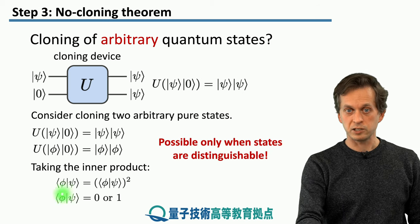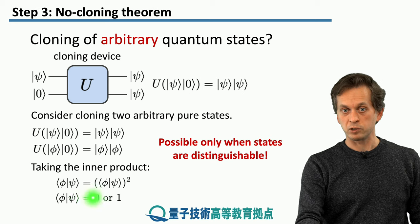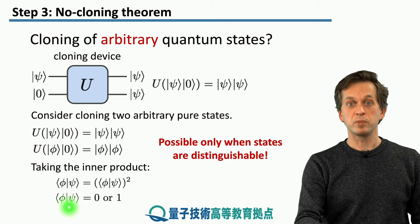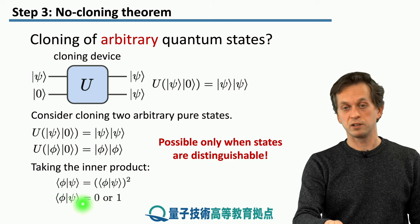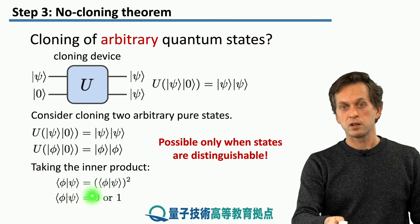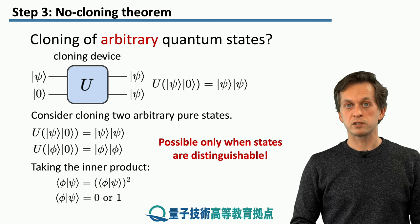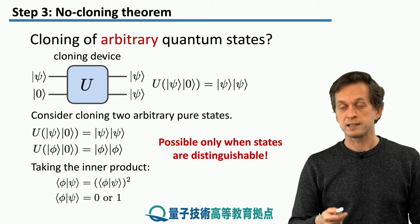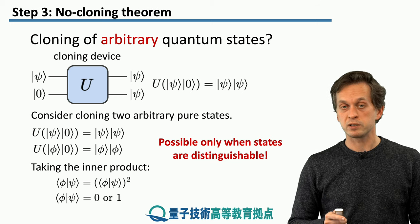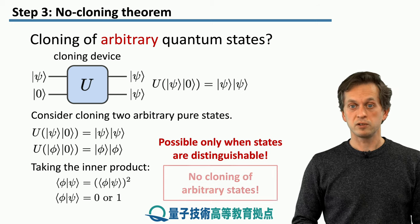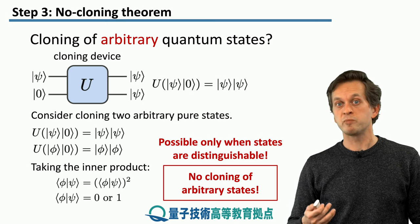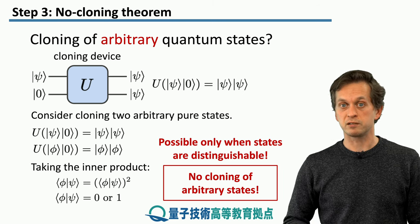What does this actually mean? When the inner product of two states is 1, it means the two states are actually the same — they must be identical, since we assume they are normalized. When it's 0, it means the two states are orthogonal. So our cloning really works, as we saw in the example, for states that can be distinguished with certainty. Remember, orthogonal states are always distinguishable deterministically. So we can say: no cloning for arbitrary states. We cannot clone an arbitrary state in quantum mechanics, which is in stark contrast to classical physics.